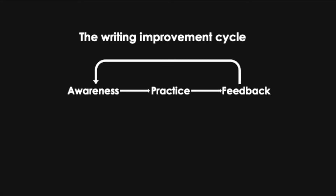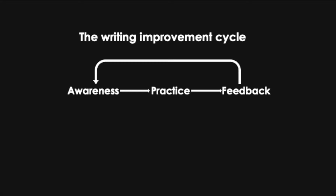So let's look at the writing improvement cycle. If you took my course on how to write your scientific journal article, you've seen this slide before. I came up with this concept after teaching scientific writing at the university level for several semesters, reflecting on how students were learning. It starts with awareness. That awareness is put into practice, and then you get feedback on your practice, which gives you additional awareness. Then you do more practice, get more feedback — a virtuous cycle that improves your abilities every time you go through it.